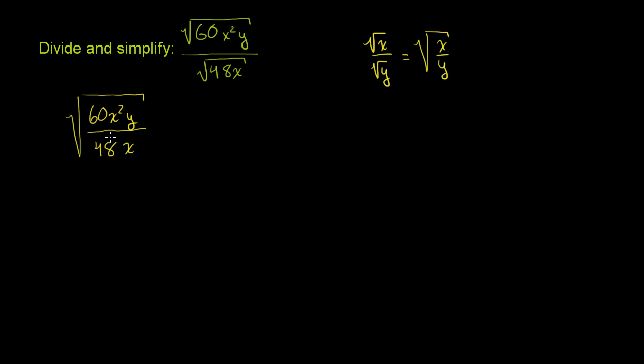And then we can first look at the coefficient terms, or the coefficients of each of these expressions, and try to simplify that. Both the numerator and the denominator is divisible by 12. 60 divided by 12 is 5. 48 divided by 12 is 4.